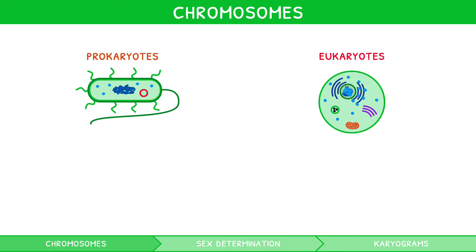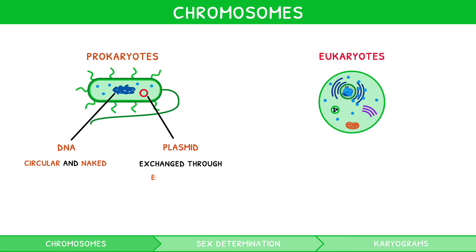In prokaryotic cells, DNA is circular and naked, i.e. not associated with protein. Additionally, loops of DNA called plasmids are also present. Plasmids are exchanged through binary fission, conjugation via pili, or taken up from the environment. They contribute to traits such as antibiotic resistance, but play no role in daily metabolism.